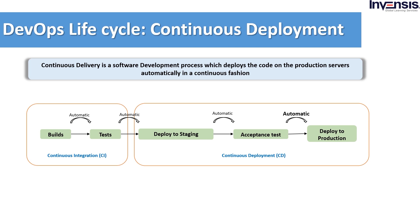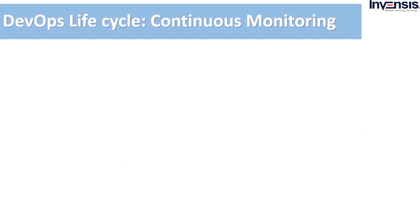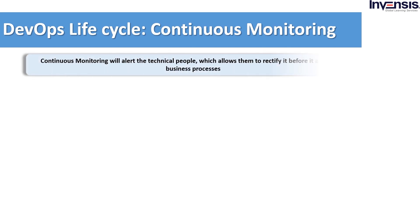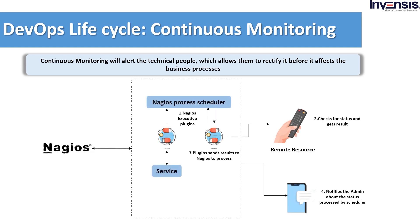Containerization tools ensure consistent application development, testing, and deployment across environments. Nagios is a tool used for continuous monitoring of systems, applications, and services in DevOps. Failures will alert the technical people, allowing them to rectify issues before they affect business processes. Nagios usually runs as a service and has plugins that reside on the same server. They contact servers on your network, which can either be remote or on the internet. You can view the status information using the web interface of Nagios or receive an SMS notification to your mobile phone.